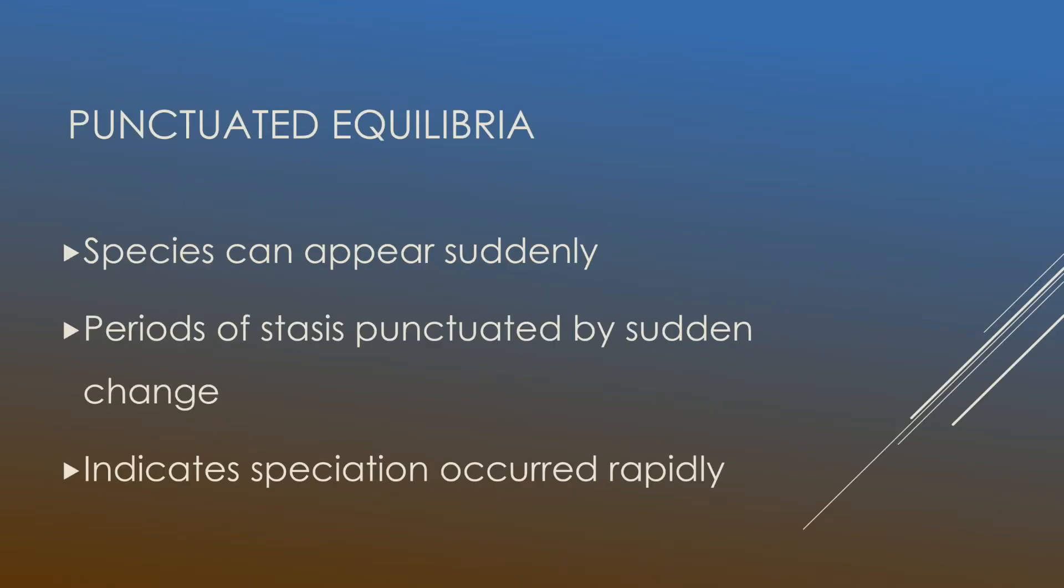Firstly we have punctuated equilibria, and this is known to be the case when species appears suddenly in the fossil record. What happens is during periods of stasis, or a length of time in which nothing is really happening, we will see rapid change and then those species will undergo little to no change for the rest of their existence. This supports the idea that sudden change is what drives punctuated equilibria.